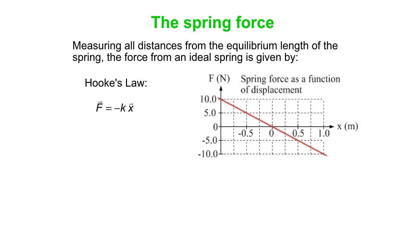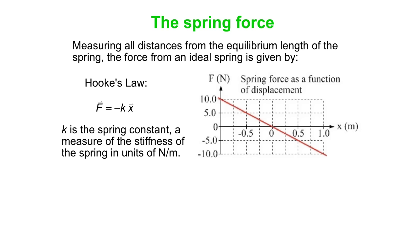It's proportional to x. x is the displacement from equilibrium. And k is what we call the spring constant. It's a measure of how stiff the spring is. It's got units of newtons per meter. So a very stiff spring has a very large k value.